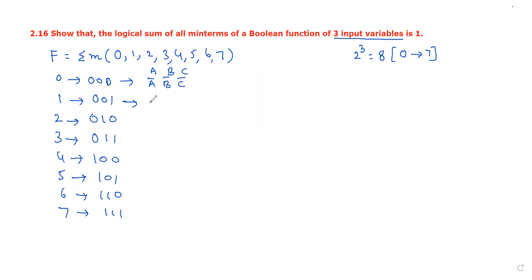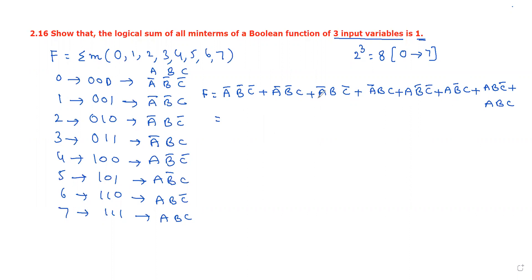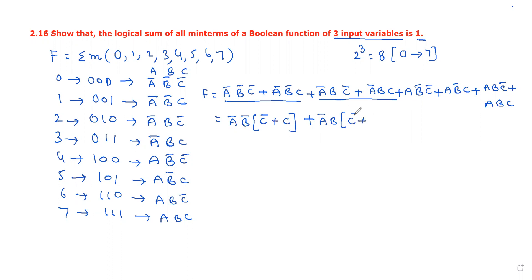Next, the product terms - the sum of all minterms. Taking the first two terms: A dash B dash C dash plus A dash B dash C. Taking A dash B dash common gives A dash B dash times (C dash plus C). Similarly, AB dash C dash plus AB dash C gives AB dash times (C dash plus C).